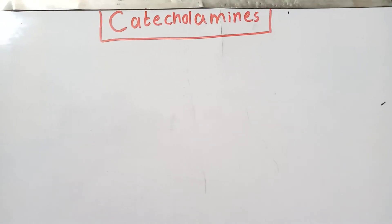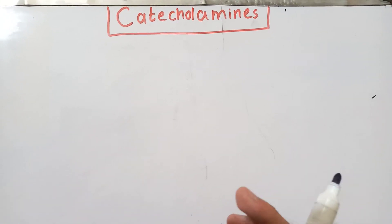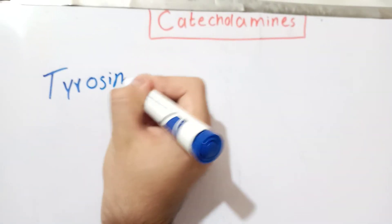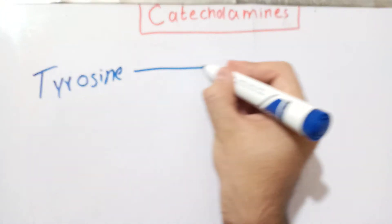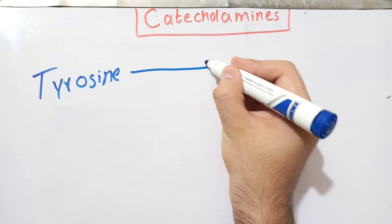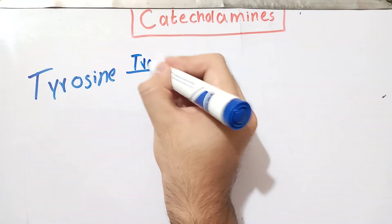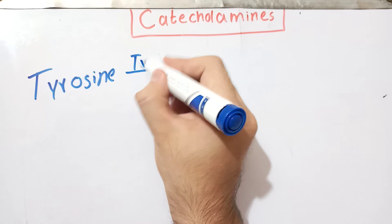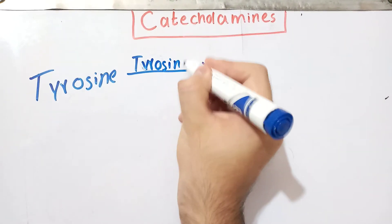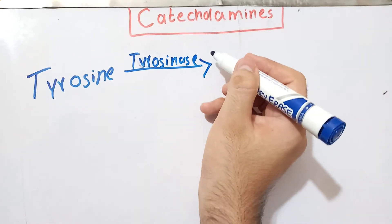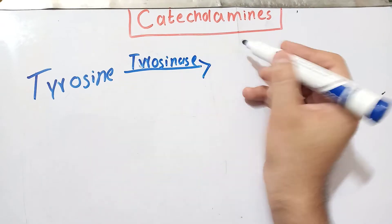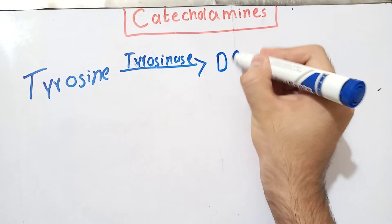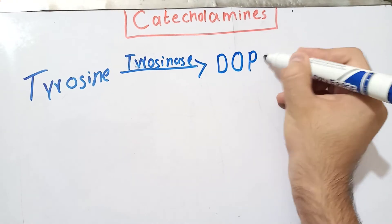All three of these amines are formed from the amino acid tyrosine. Tyrosine is first hydroxylated by an enzyme called tyrosinase, which is a copper-containing enzyme. This enzyme causes the hydroxylation of tyrosine into a compound called dihydroxyphenylalanine (DOPA).